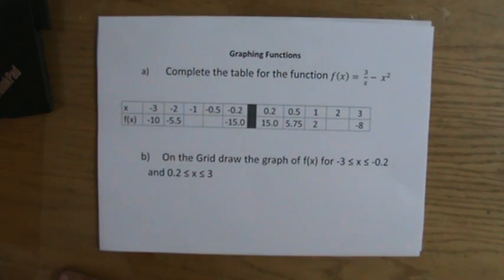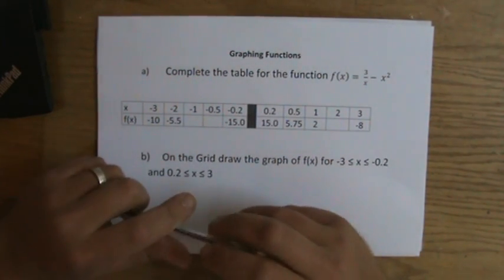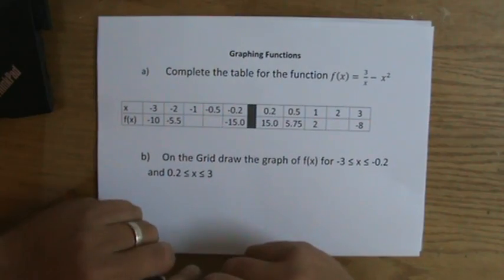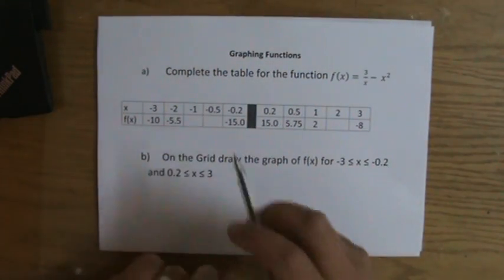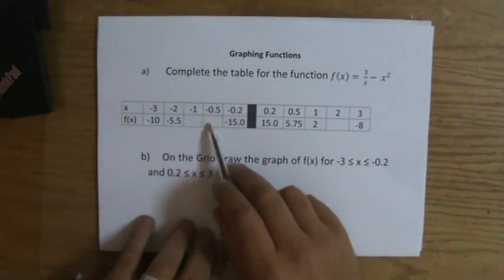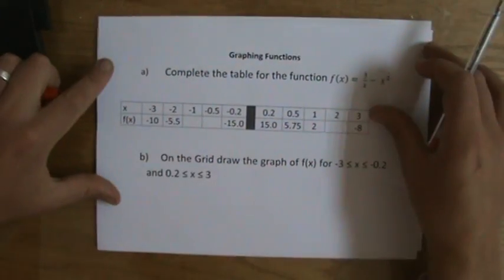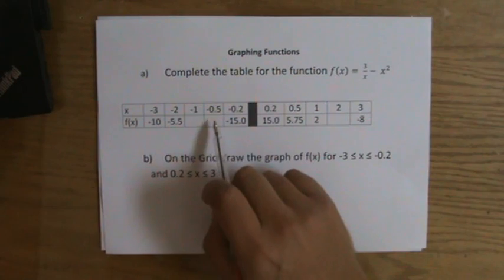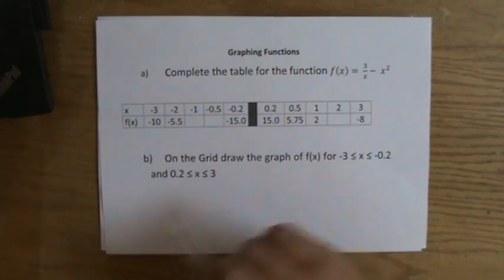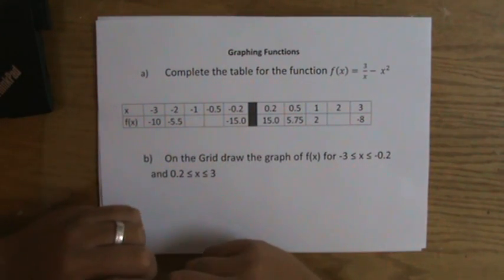The first part says: complete the table for the function, and they give a function f(x) equals 3 over x minus x squared. They give me this table and I have to complete it — one, two, three boxes are empty. This is usually worth three points, which means one point for each box you fill in with the correct number.